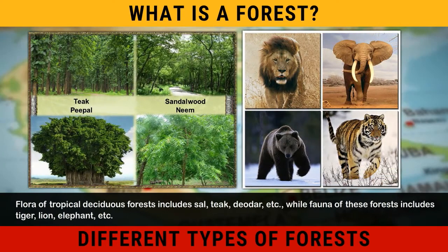Flora of tropical deciduous forests includes Sal, Teak, Deodar, etc. While fauna of these forests includes Tiger, Lion, Elephant, etc.